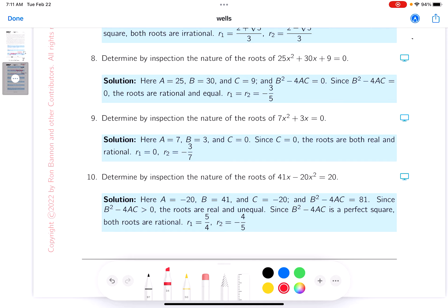Okay, by inspection, a is 25, b is 30, and c is 9.